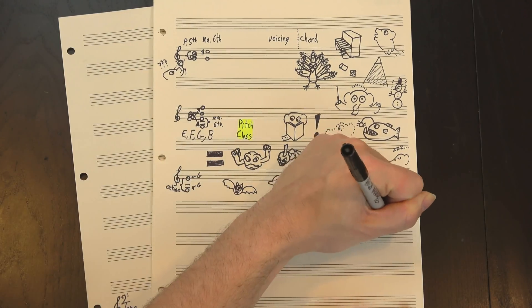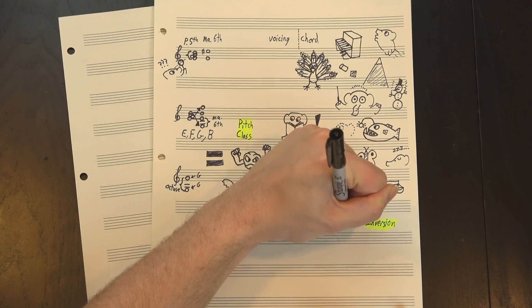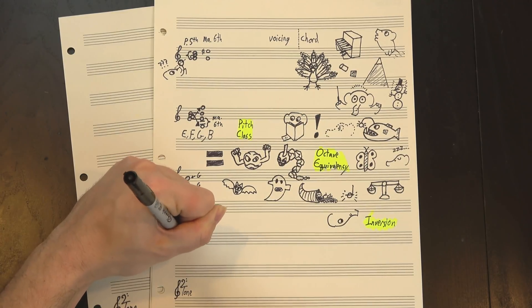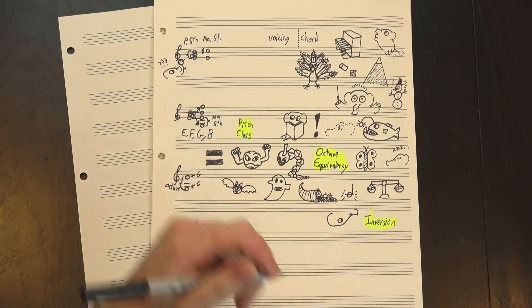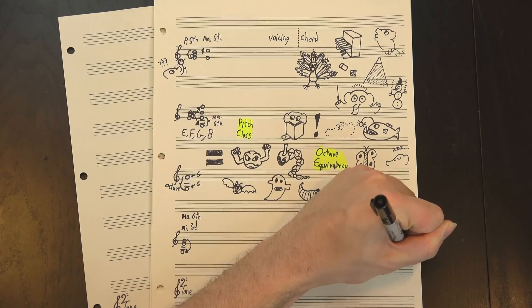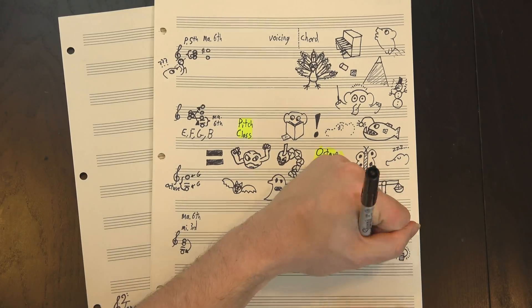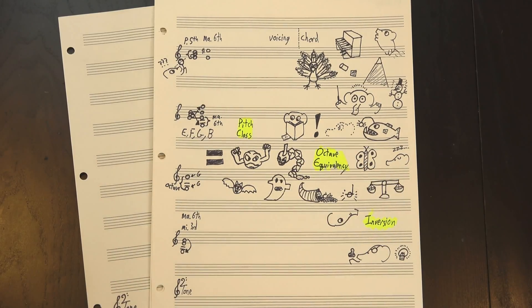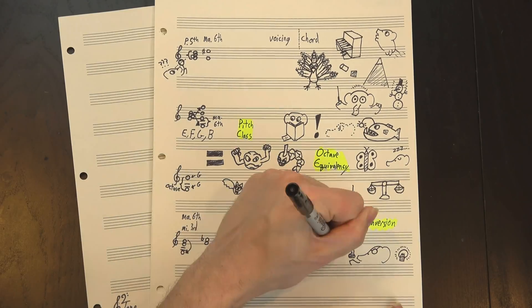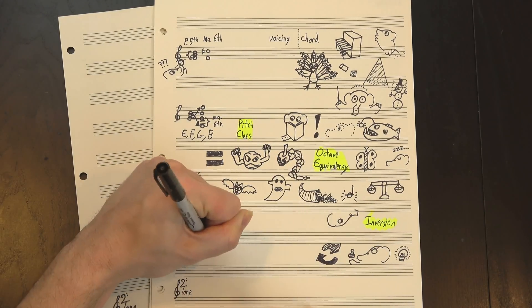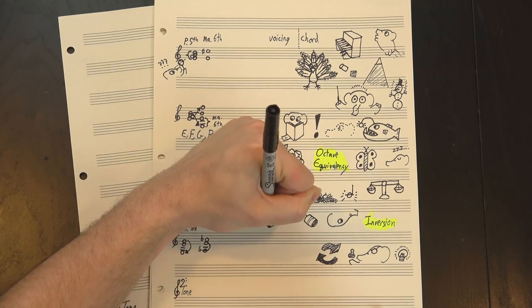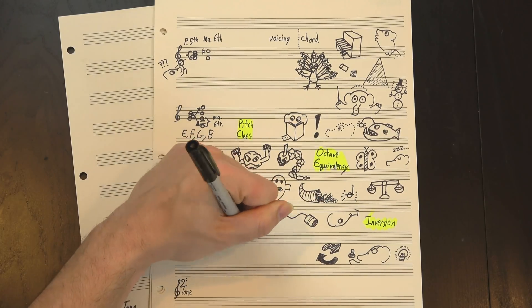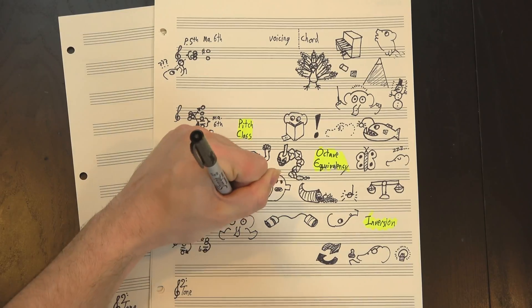This means we can do a thing called inversion, which is where we take an interval and turn it upside down. Like, our initial voicing had E below G, giving us a minor 3rd, but if we move the G down so it's on the bottom, we wind up with a major 6th, and the same thing always happens with these two intervals. If you take a pair of pitch classes that, in one configuration, form a minor 3rd, you can always rearrange them to form a major 6th instead, and vice versa. The two intervals are fundamentally linked by inversion, which means that if we're not worrying about octave, there is no difference between them.